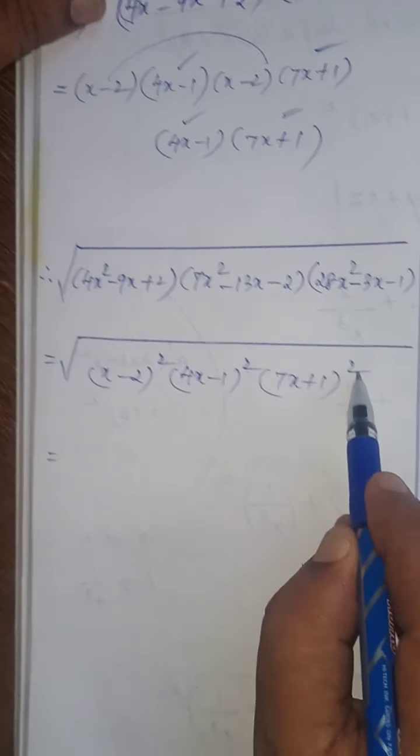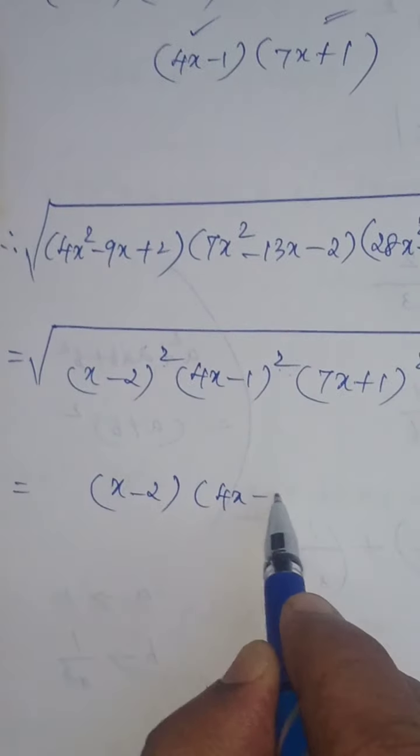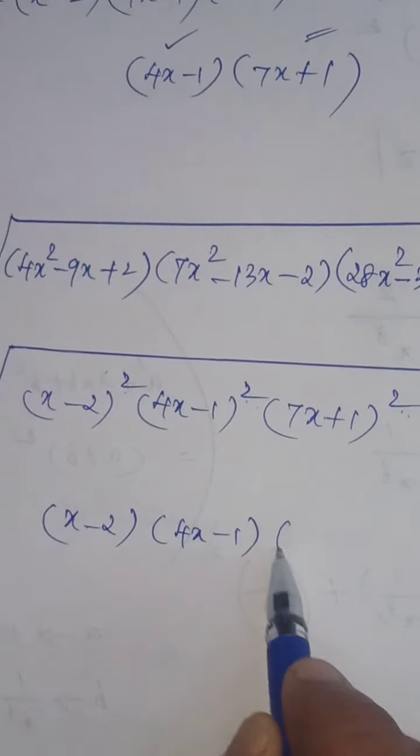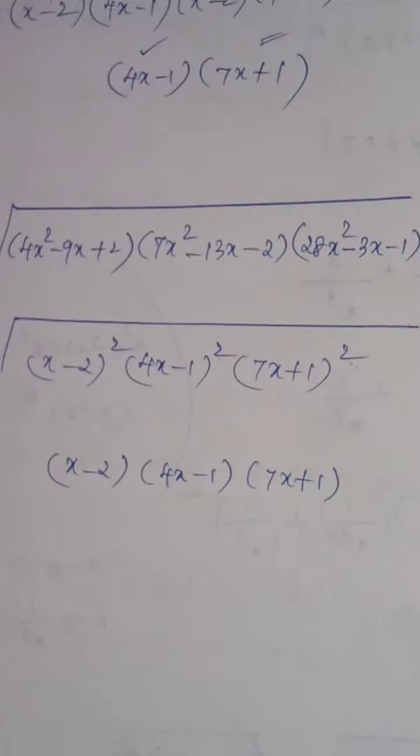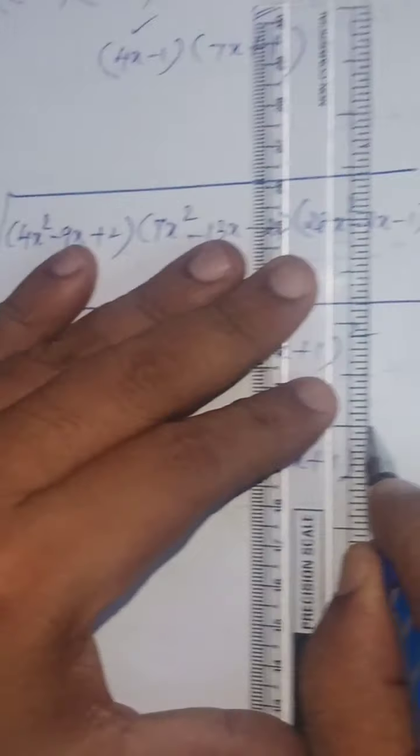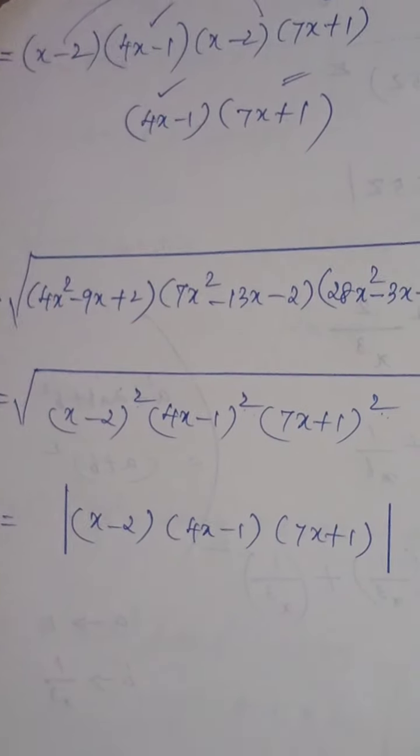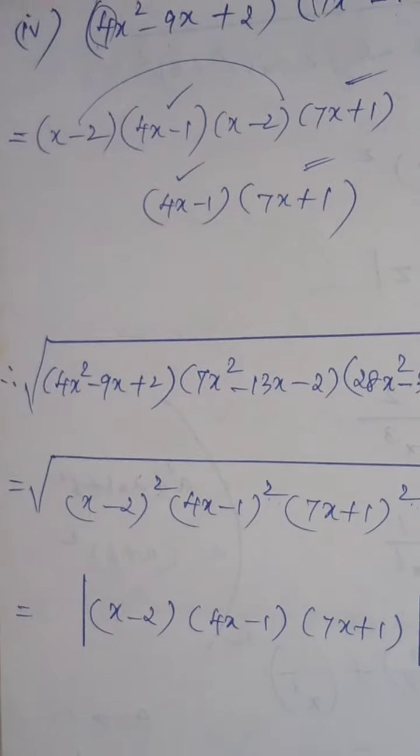So that x minus 2, 4x minus 1 power 1 only, here 7x plus 1 power 1. That's the answer. Write this answer inside the modulus. Subdivision number 4 is over. I'll be teaching subdivision number 5 in the next video. Thank you children.